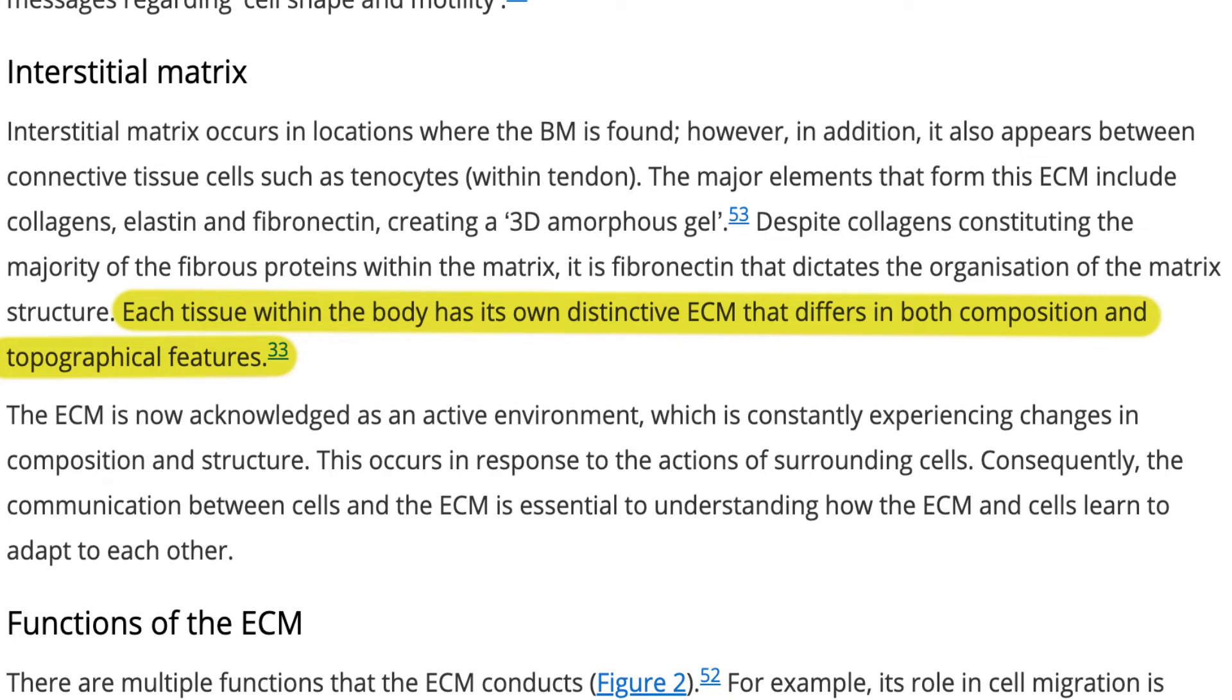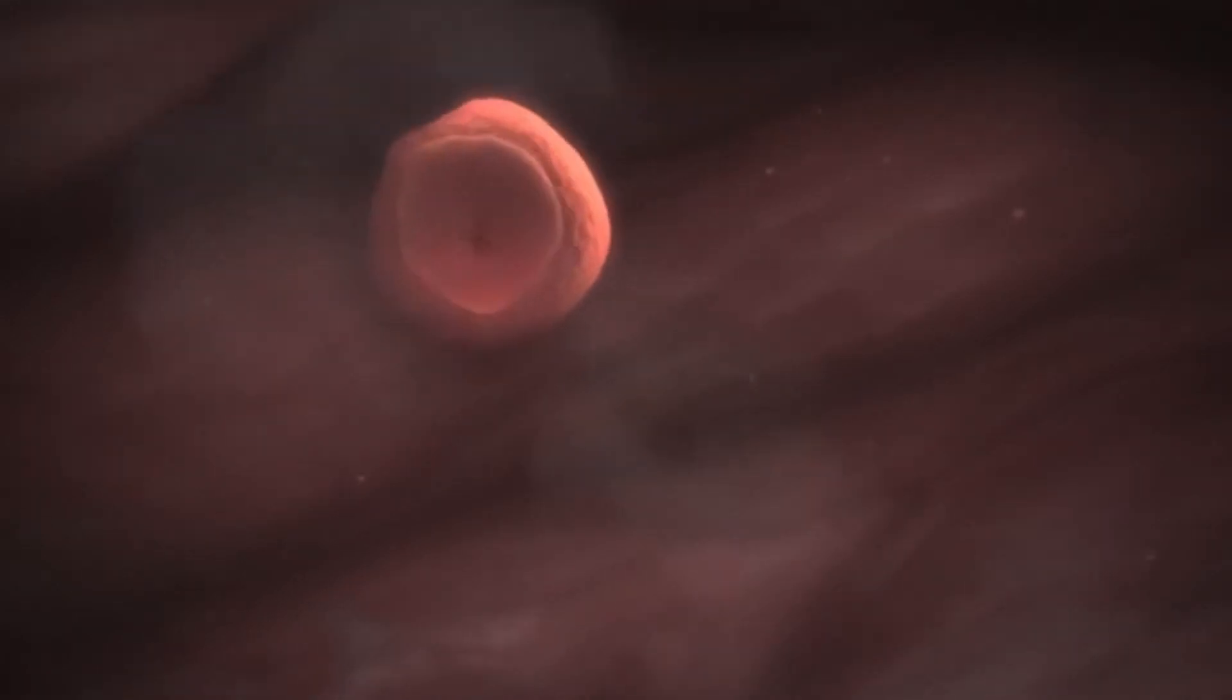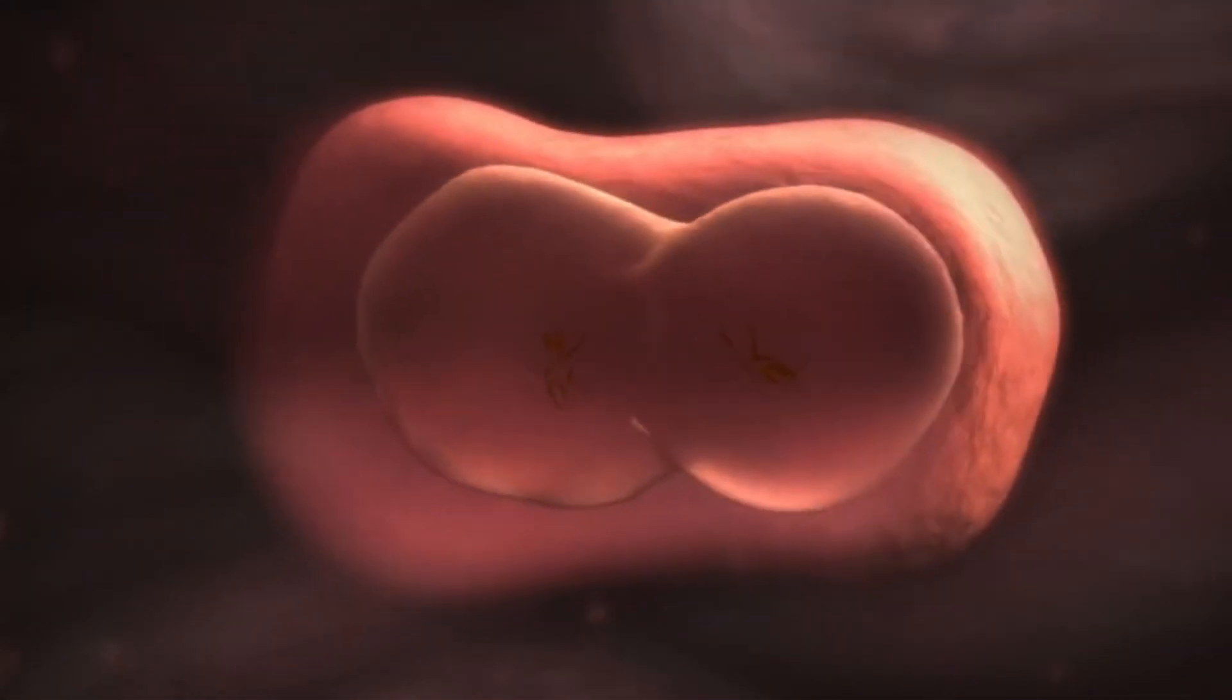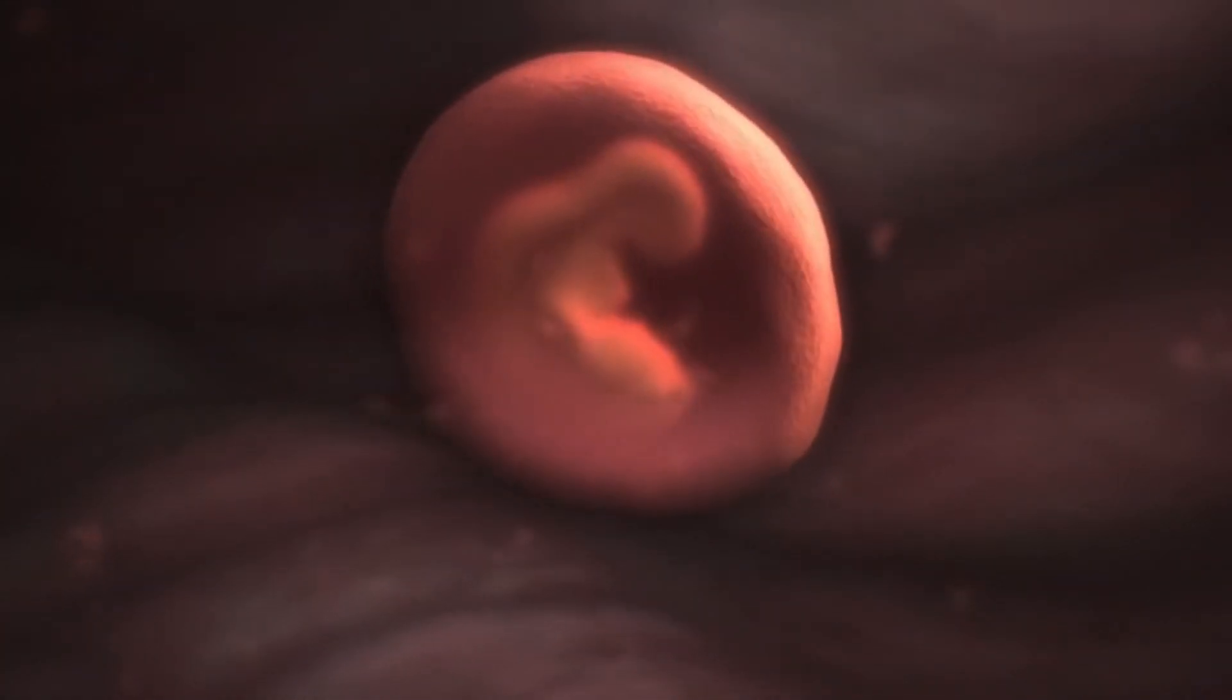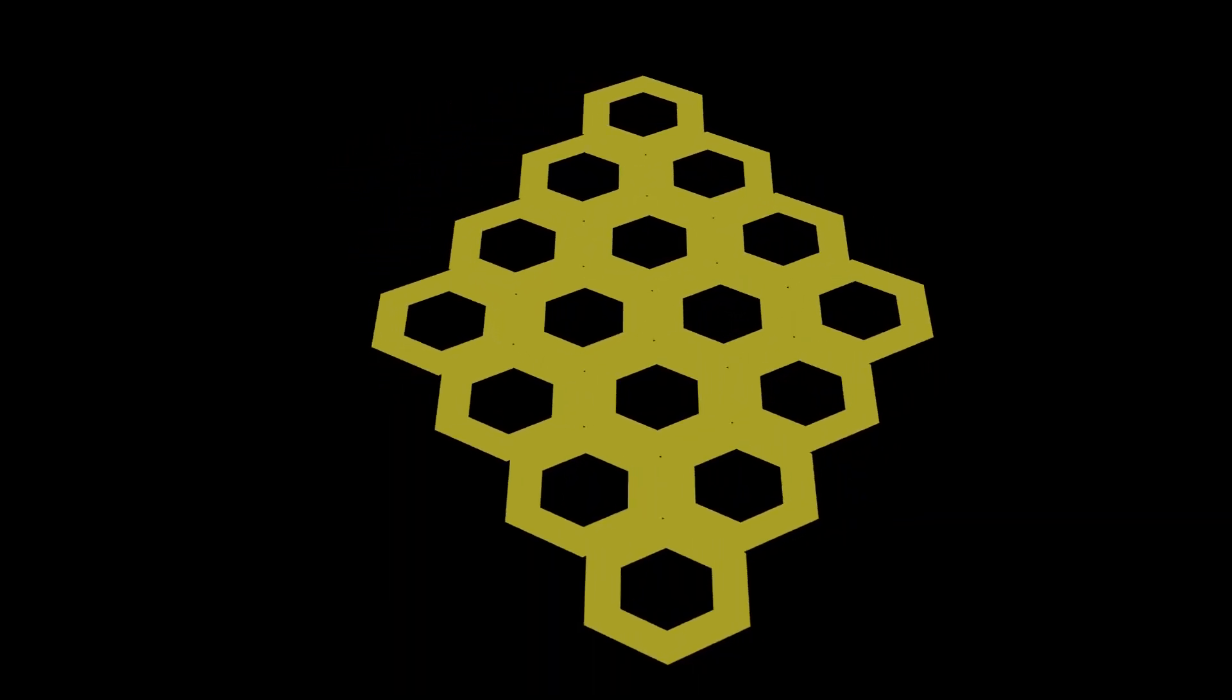The composition and organization of the extracellular matrix is established during tissue development and maturation. The matrix is dynamically regulated and remodeled as the tissue develops, with different proteins being deposited and aligned in a specific spatial pattern. This developmental history is then stored within the mature extracellular matrix in the form of which proteins are present, how they are arranged, and which signaling molecules are embedded.